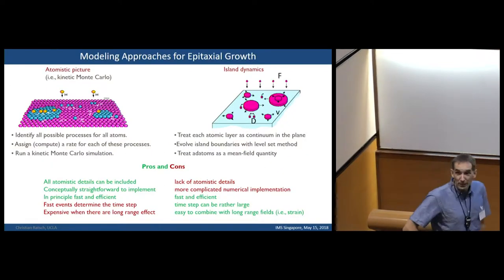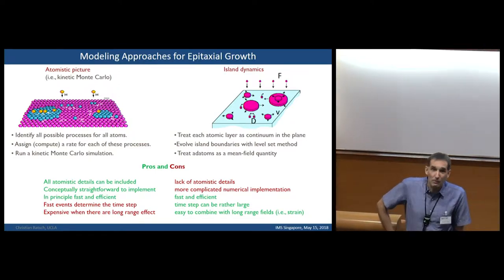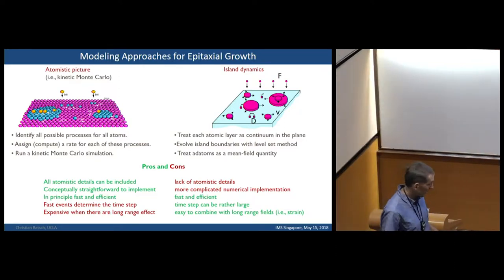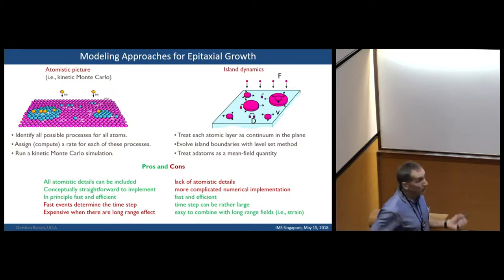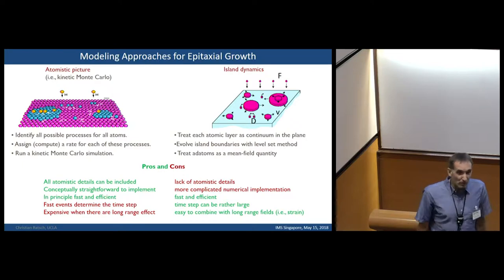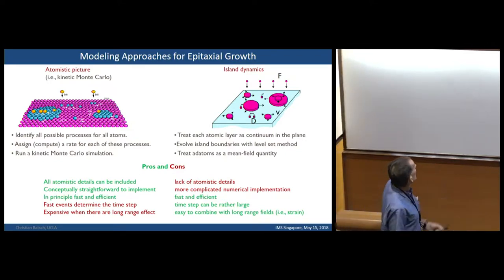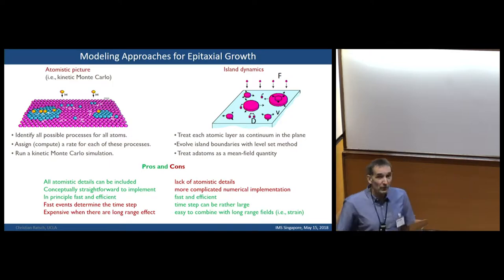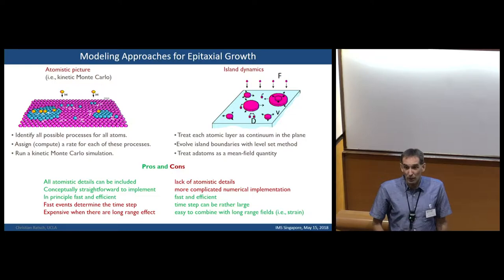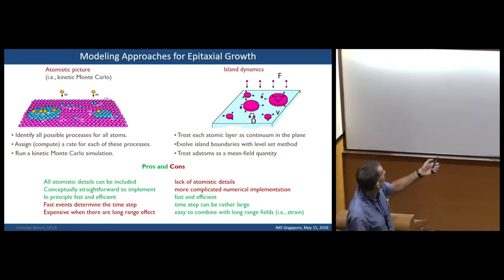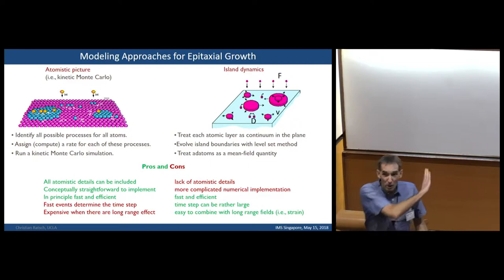How do we model it? I will describe a kinetic Monte Carlo simulation and an island dynamics model that uses a level set. In an atomistic simulation, as the name suggests, we simulate every atom. We identify all the processes — atoms raining down, hopping to a neighboring site, hopping along an island edge — and assign a rate for each process to occur. We run a Monte Carlo simulation: there's a probability associated with each rate, and we execute events. I will talk about this in the first part of my talk.